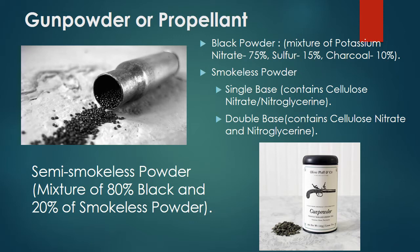Double base smokeless powder contains cellulose nitrate and nitroglycerin. Semi-smokeless powder is a mixture of 80% black powder and 20% smokeless powder.